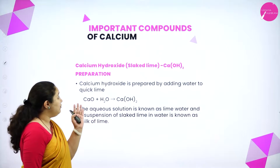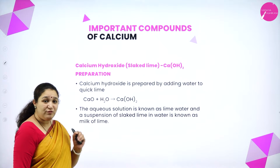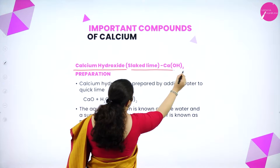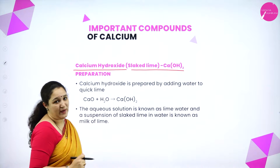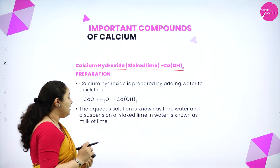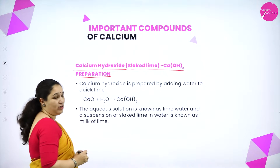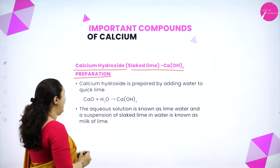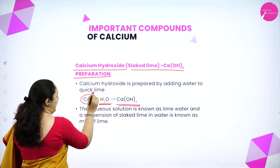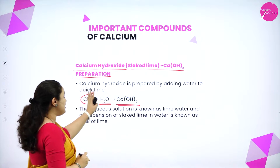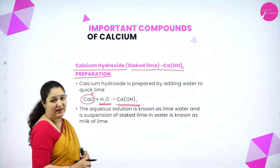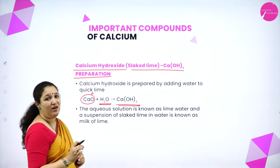Today we shall learn about important compounds of calcium. The first important compound is calcium hydroxide, or slaked lime — Ca(OH)₂. It is prepared by adding water to quick lime (CaO). This process is also called the slaking of lime.